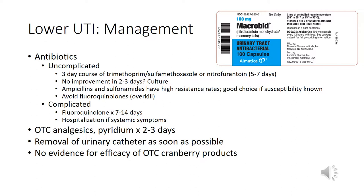Complicated urinary tract infections should be treated with a seven- to 14-day course of fluoroquinolones, and if the patient develops systemic symptoms, hospitalization should be considered. Patients experiencing irritative symptoms — frequency, urgency, dysuria — should be directed to pyridium for a short course of two to three days to alleviate those symptoms. If the patient has a catheter, remove it as soon as clinically indicated. There is really no evidence for efficacy of over-the-counter cranberry products.